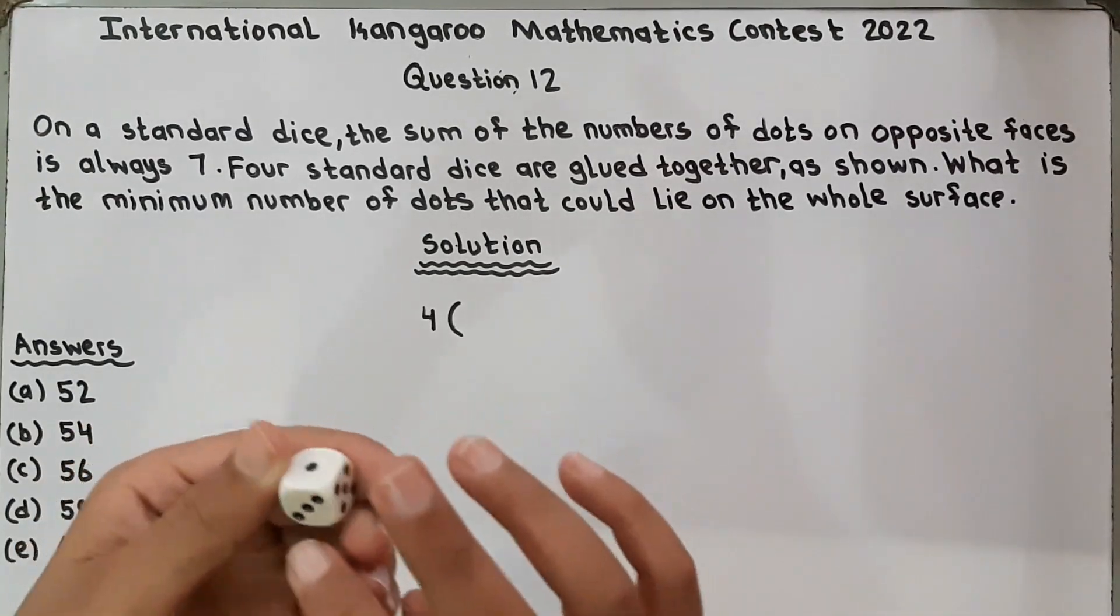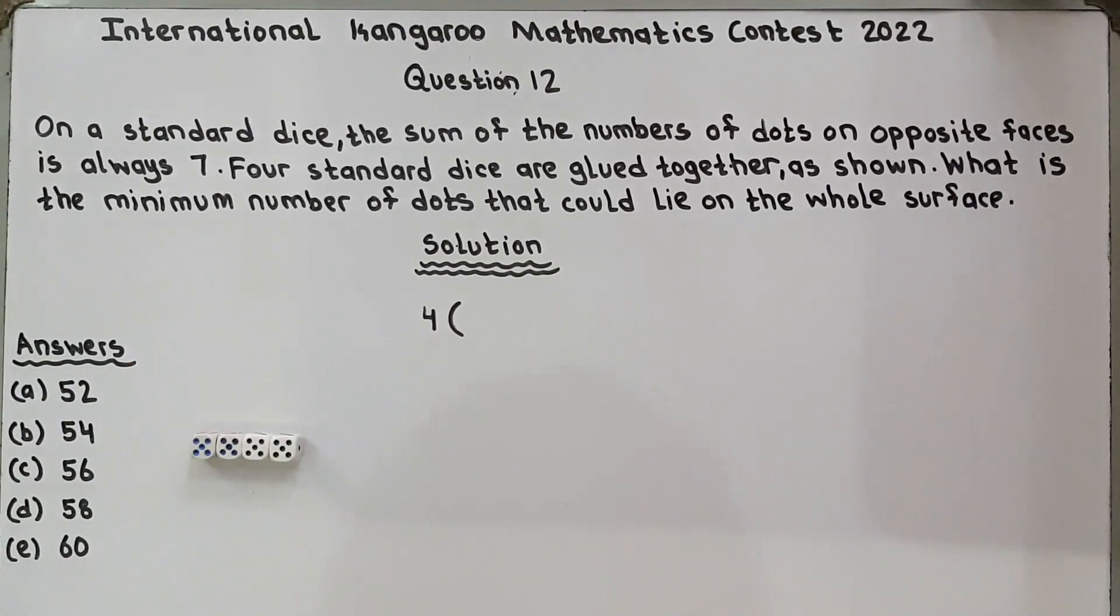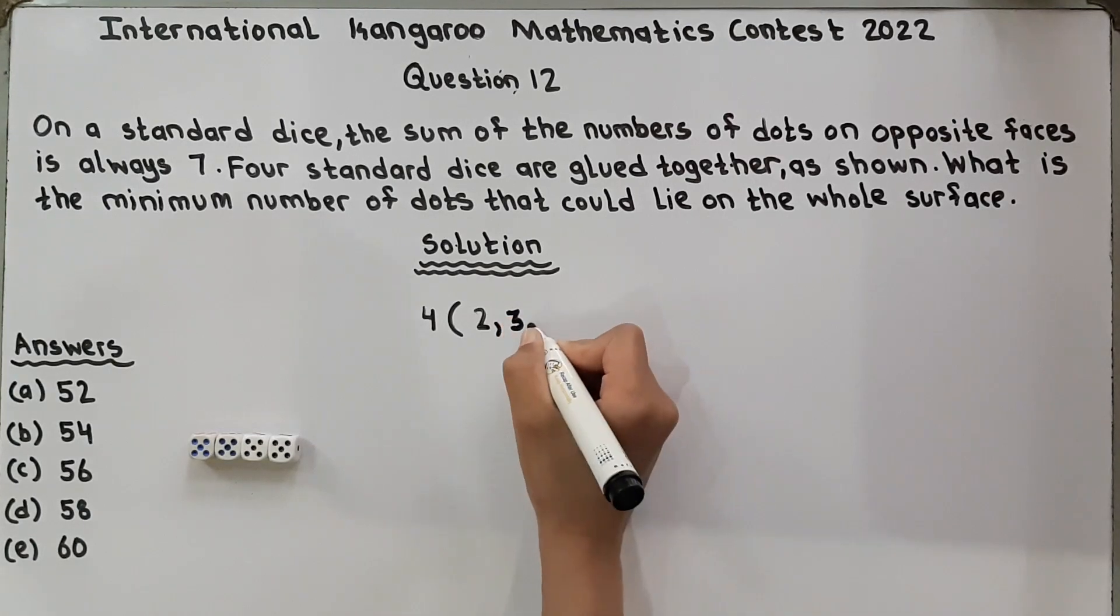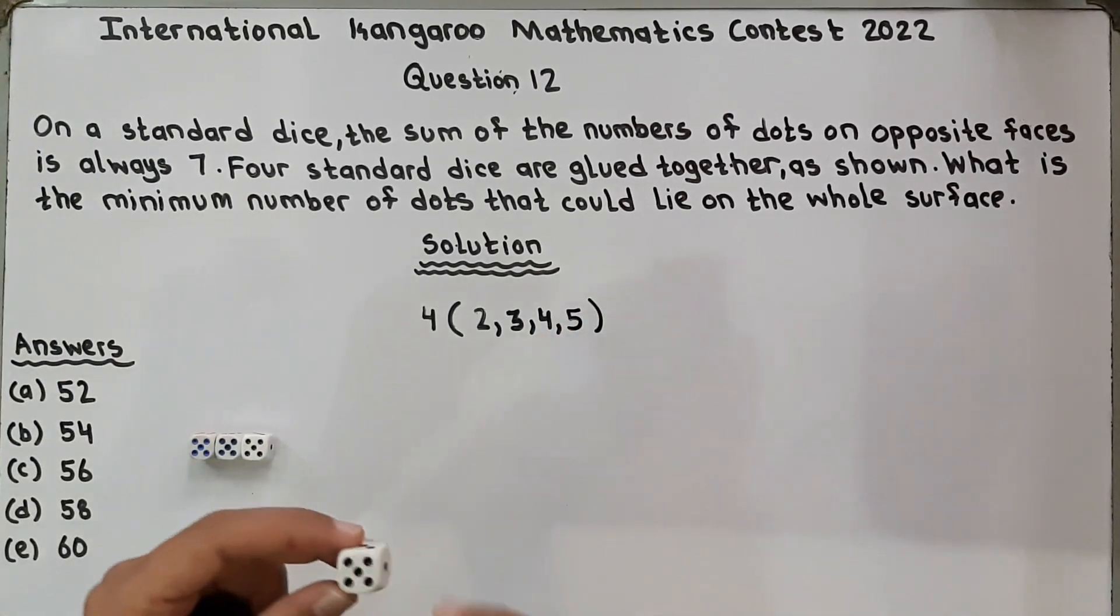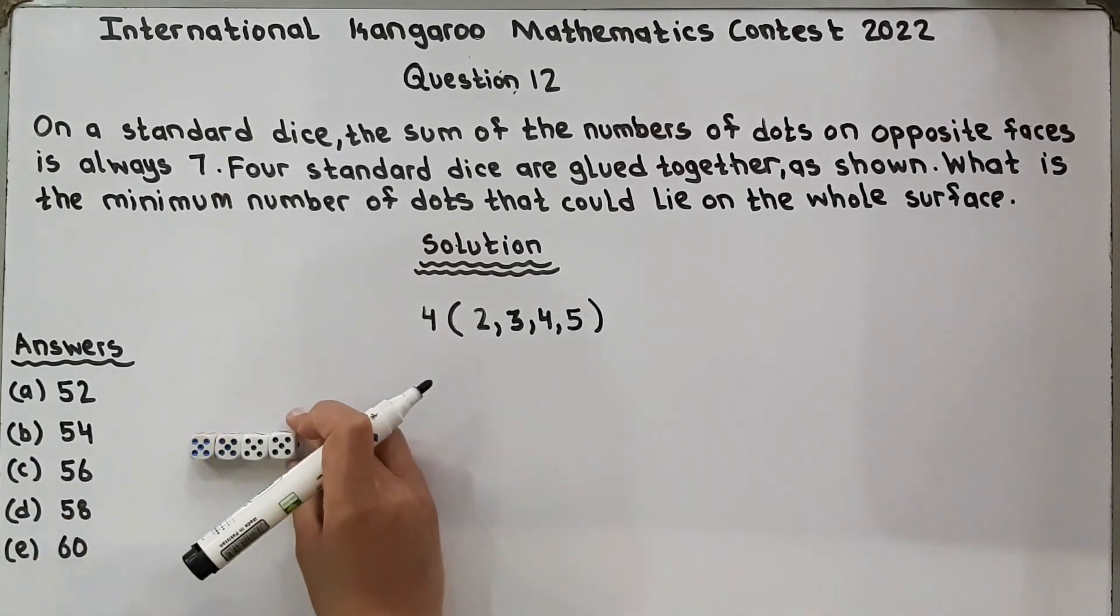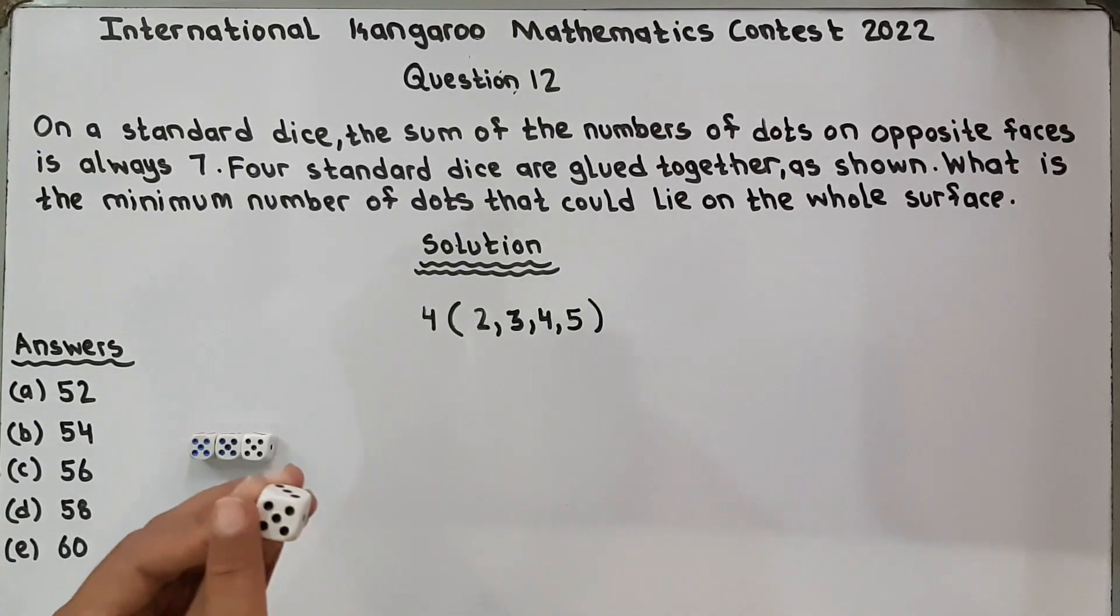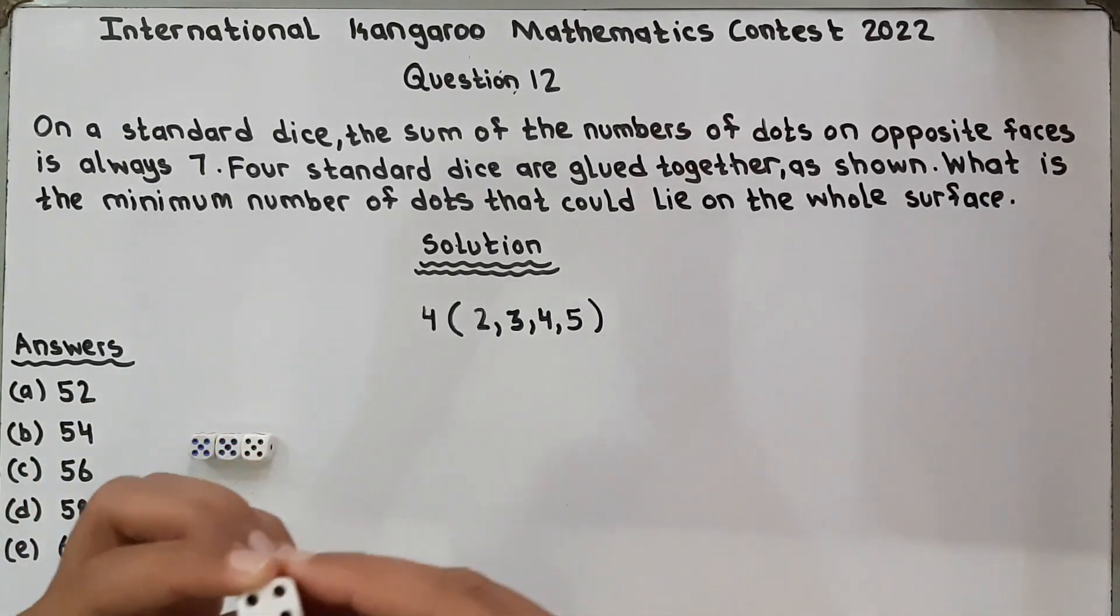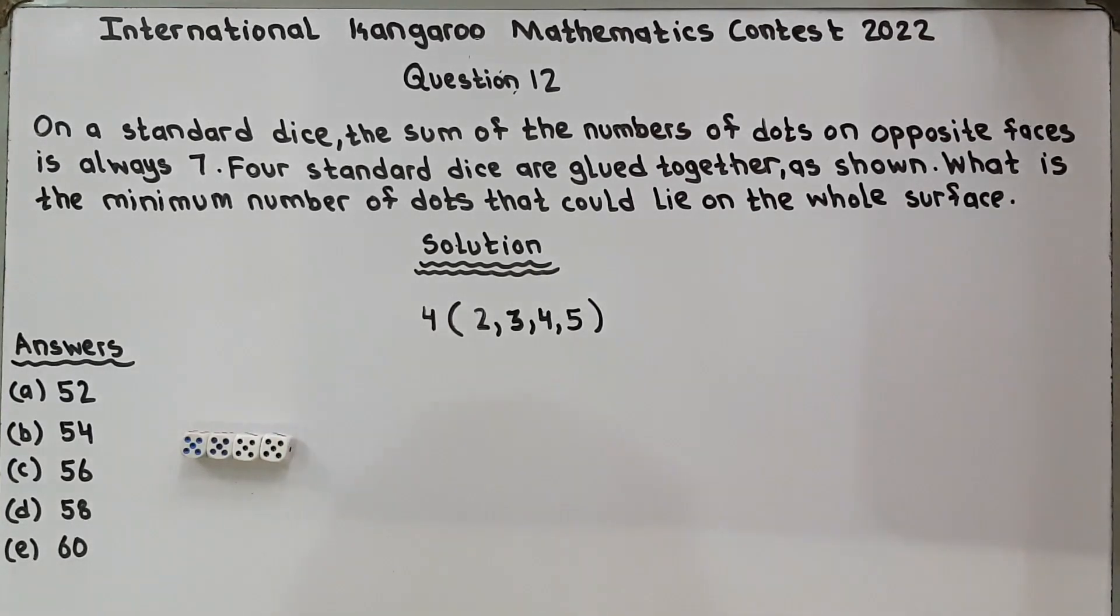Now, first we will count 5, 4, 2, 3, 1, 2, 3, 2, 3, 4 and 5. Because 6 is not visible, so they have asked the minimum number of dots lie on the whole surface. If 6 is not available, it means this surface, this surface, this surface and this surface. So we have counted this surface, this surface, this surface and this surface. So 2, 3, 4 and 5. We have to count 2, 3, 4 and 5 and plus.